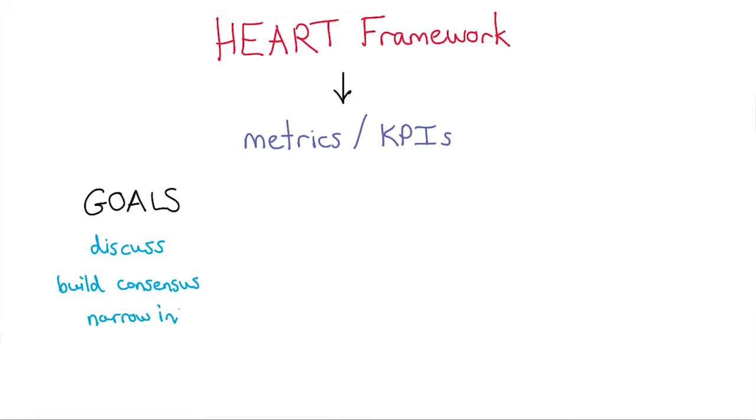Now, a common mistake is to define the goals in terms of the metric. For example, you might say that your goal is to increase the number of people who make a purchase, which is common for many e-commerce websites. Instead, you should think about the user experience improvements that could help drive that change. So be sure to narrow in on your definition of the goal.